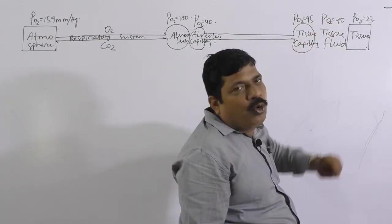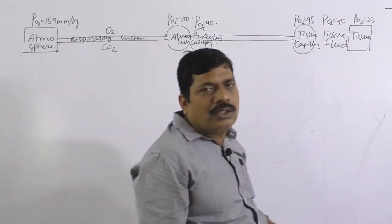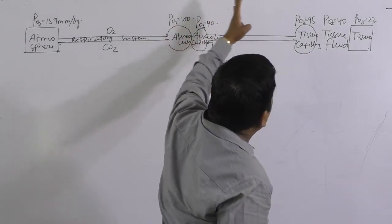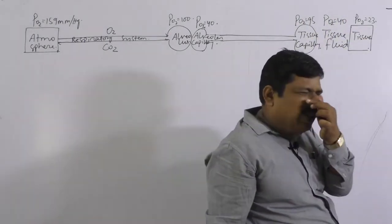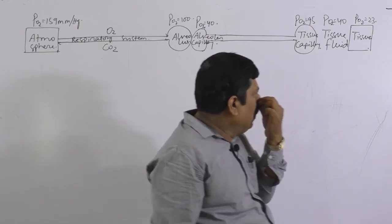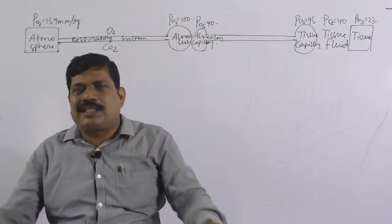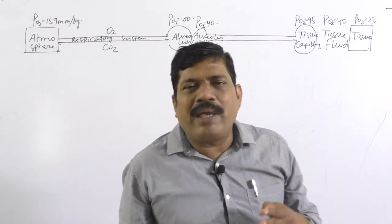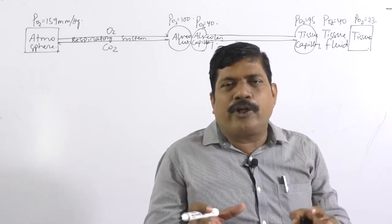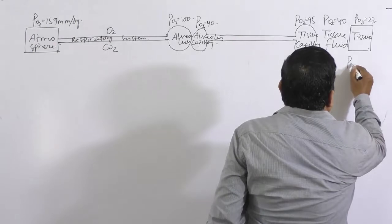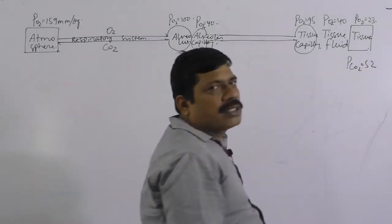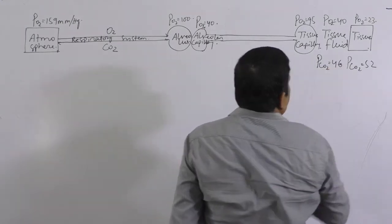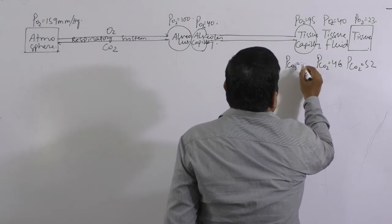At the tissue fluid, partial pressure of oxygen is 40 mmHg, and at the tissue it is 23 mmHg. Oxygen reaches the tissue and is utilized for oxidation of food. Carbon dioxide is produced as a byproduct. The partial pressure of CO2 at the tissue is 52 mmHg, at the tissue fluid is 46 mmHg, and at the tissue capillary is 40 mmHg.